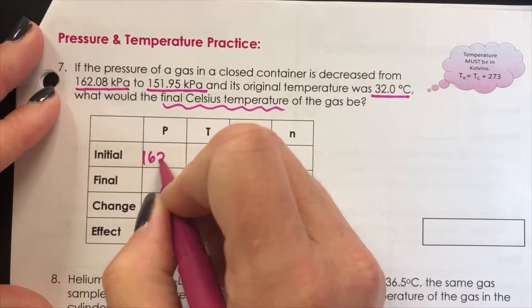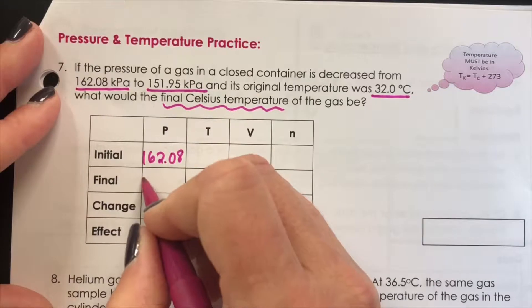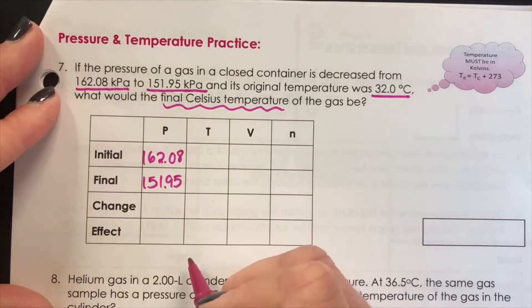So our initial pressure is 162.08, final is 151.95.